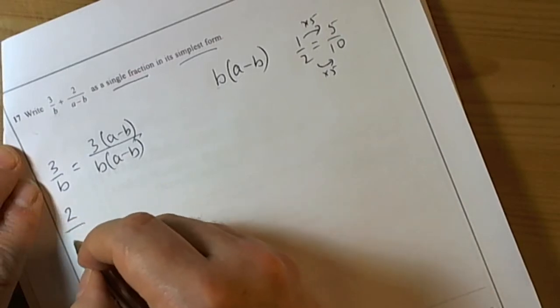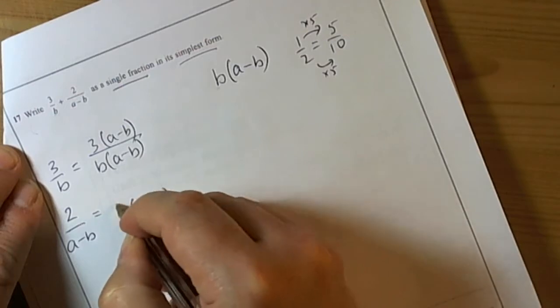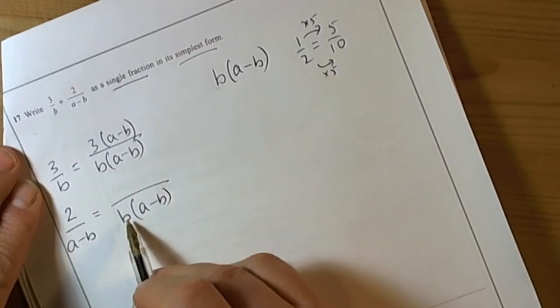And the same for 2 over (a-b), we need it to have b(a-b) on it. So what we have to multiply this by is b.